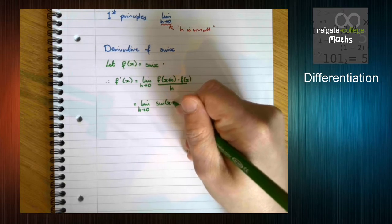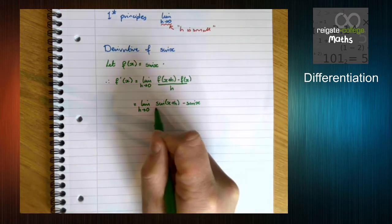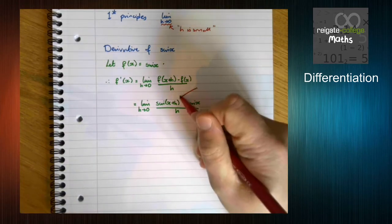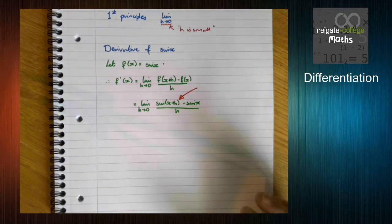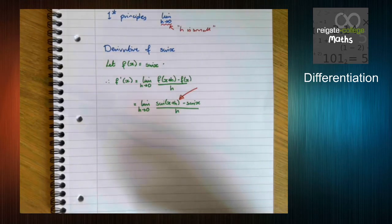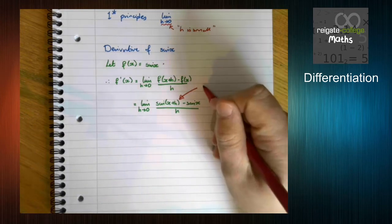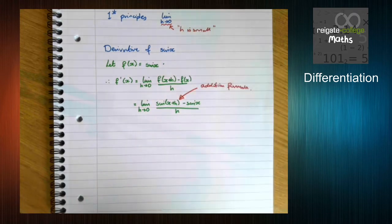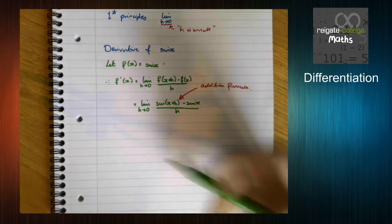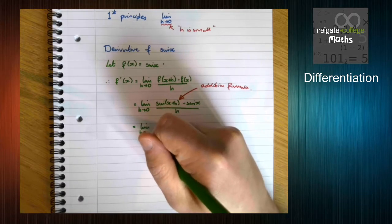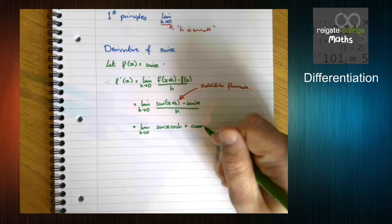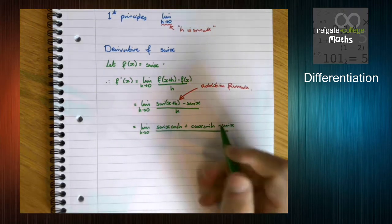So we get sine of x plus h minus sine x, all over h. Notice we've got sine of x plus h, which we don't really want. When we did differentiation from first principles in the first year, we just expanded the brackets, but we know sine, cos, and tan don't work that way. So we use the addition formula to expand that bracket, giving us the limit as h tends to 0 of sine x cos h plus cos x sine h, minus sine x, all over h.